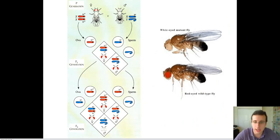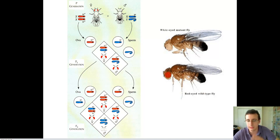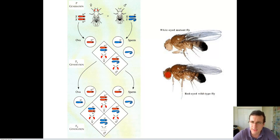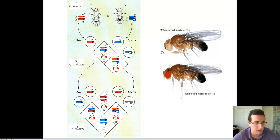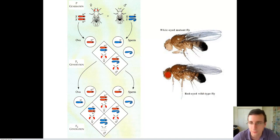Now let's look at how Thomas Hunt Morgan actually discovered sex linkage. He studied linkage of genes and the breakage of linkage through crossing over, which is what he's famous for. But before that, he discovered the idea of linkage through sex linkage — the idea that there were some traits in fruit flies that seemed to have something to do with sex, because one sex would be more likely to have the trait than the other. For example, he found that females were more likely to have red eyes and males were more likely to have white eyes.